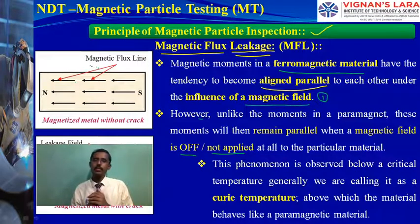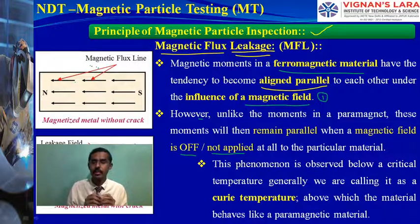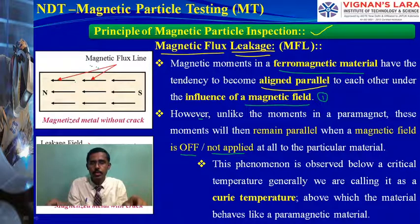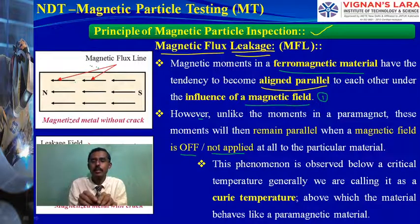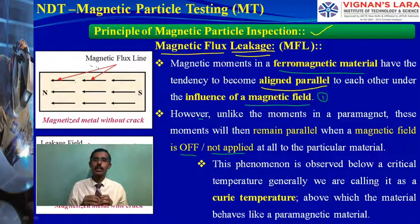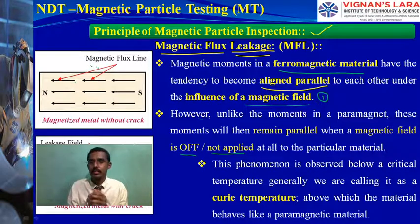This phenomenon of magnetic alignment is observed below a critical temperature, generally called the Curie temperature. Above the Curie temperature, the material behaves as a paramagnetic material, and therefore its magnetic properties change. In this inspection, we do not heat the samples — we simply pass a current to generate north and south poles and a magnetic field.